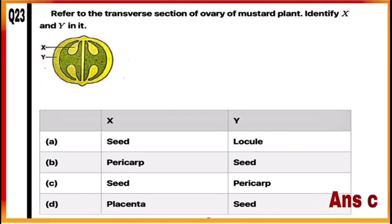Question 23: Refer to the transverse section of the ovary of a mustard plant and identify X and Y in it. In the given diagram, X represents seeds and Y is the pericarp. So mark C as the correct answer.